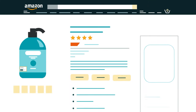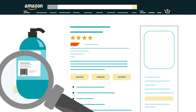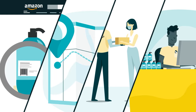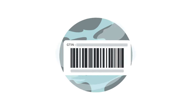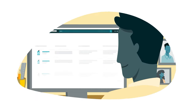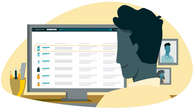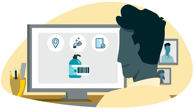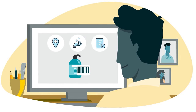While all three numbers help different groups identify, track, buy, and sell products, only GTINs are universal. And they're the number you'll use most often to list products on Amazon. Depending on the product you're listing, you might need to locate an existing GTIN, obtain a new one, or apply for an exemption.